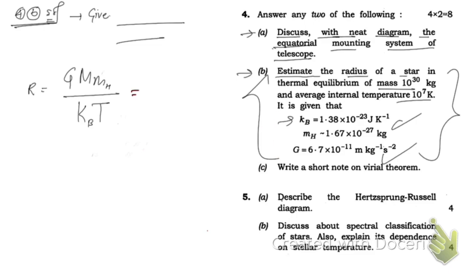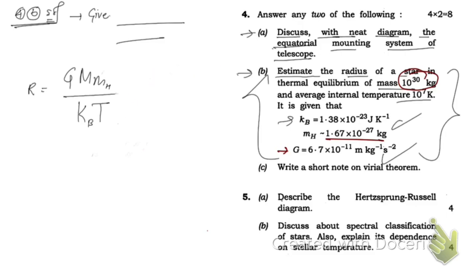The value of G is 6.7 × 10⁻¹¹. Capital M is 10³⁰ kg. Small m_H is 1.67 × 10⁻²⁷. So plugging in: R = (6.7 × 10⁻¹¹) × (10³⁰) × (1.67 × 10⁻²⁷), divided by k_B and T.